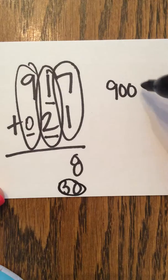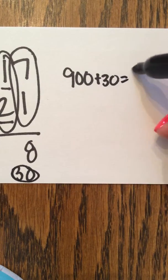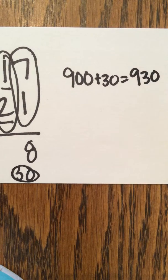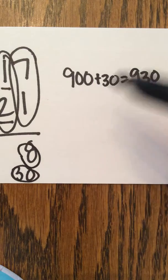Now I'm going to take my 30 and add it to the 900. 900 plus 30 equals 900 and 30. And I'm going to make sure to take my 8 up there as well.